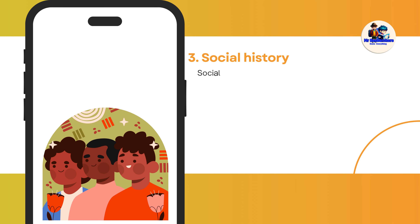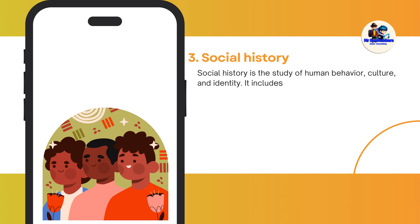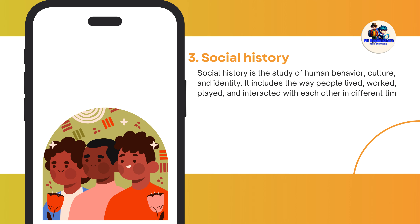Social history is the study of human behavior, culture, and identity. It includes the way people lived, worked, played, and interacted with each other in different times and places. For example, social history can help us understand how gender roles, class hierarchies, and ethnic identities evolved over time, how art, literature, and music reflected and shaped society, and how social movements like feminism, civil rights, or LGBT rights changed the world.